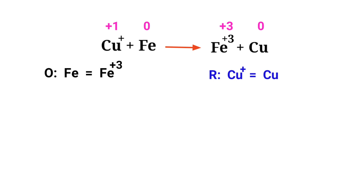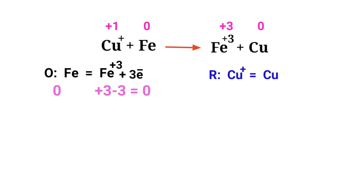For a redox reaction, the addition of charges should be equal on both sides. In the oxidation half reaction, both sides are not equal. You cannot add protons — adding 3 protons to the left side to make it equal to plus 3 is wrong. Instead, add 3 electrons to the right side to make it equal to 0. Now the addition of charges is equaled in the oxidation half reaction.